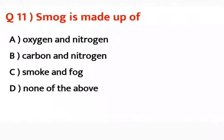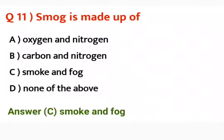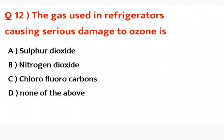Question number eleven: Smog is made up of — oxygen and nitrogen, carbon and nitrogen, smoke and fog, or none of the above? Correct answer is smoke and fog. Jab dono milte hain toh smog ban jata hai, aur us se respiratory problems create hoti hain.